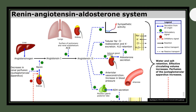ACE enzyme from the lungs converts angiotensin-1 to angiotensin-2. Angiotensin-2 interacts with an angiotensin receptor and causes direct constriction of resistant vessels and stimulates the release of aldosterone from the adrenal cortex. This leads to tubular reabsorption of sodium, potassium excretion, water retention, and an increase in glomerular perfusion.